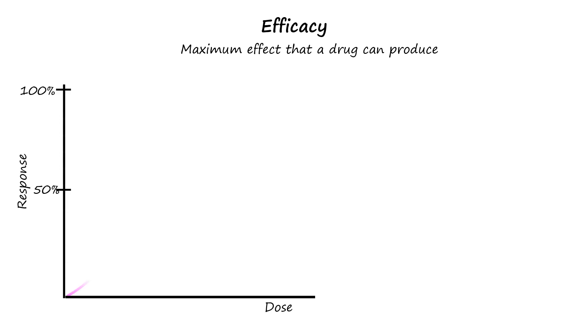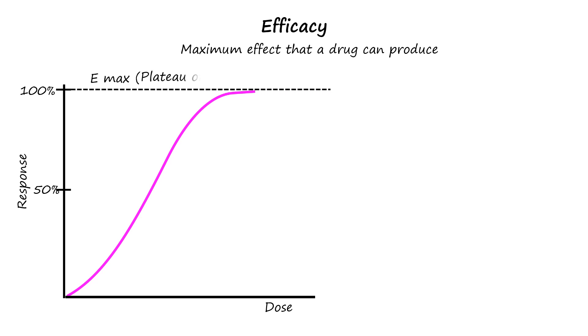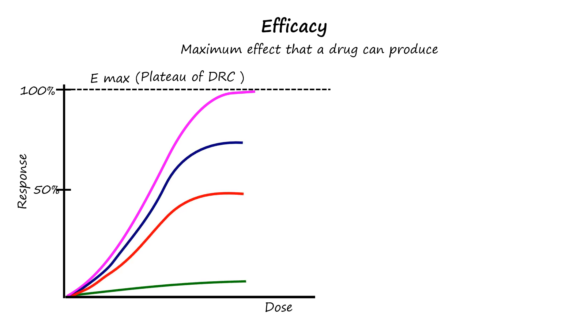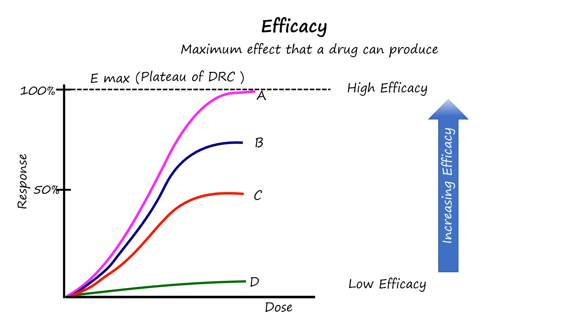Next, we have drug efficacy, which refers to the maximum effect that a drug can produce regardless of the dose. This maximum effect is represented by the plateau in the dose-response curve. Drawing additional dose-response curves to compare efficacy, we can see that drug A produces the maximum effect compared to the other drugs. We can also notice that the dose required to produce 50% of the maximum effect is the same for each drug, so the potency of the four drugs is the same, but drug A has the maximum efficacy.